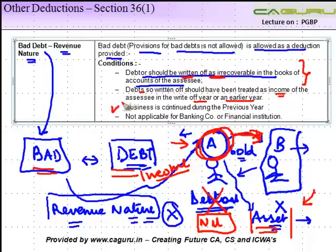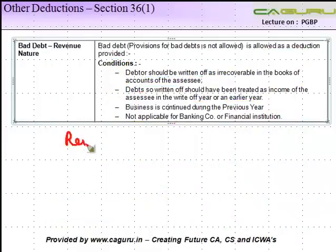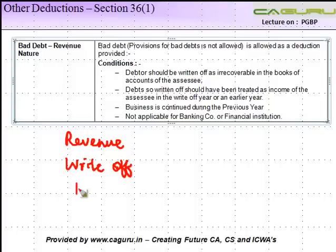The third condition is that the business should be continued during the previous year. The fourth condition is that this provision is not applicable for a banking company or a financial institution — for them, even the provision for bad and doubtful debts is allowable as a deduction subject to certain conditions. To summarize: one, it's allowable only if it is revenue in nature; two, the amount has to be written off in the books; three, this amount should have been treated as income of the assessee in some previous year; and four, the business should be continued during the previous year.